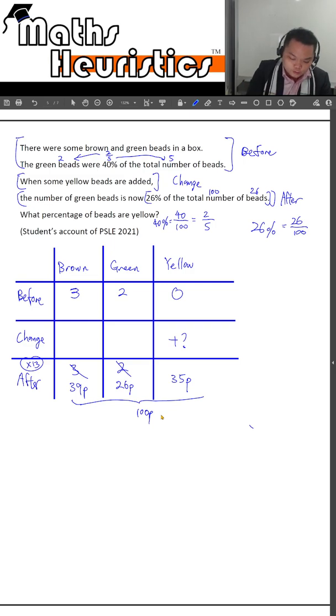So the percentage of beads that were yellow would have to be 35 out of 100. And then we convert it back into percentage. So the answer here is 35%.